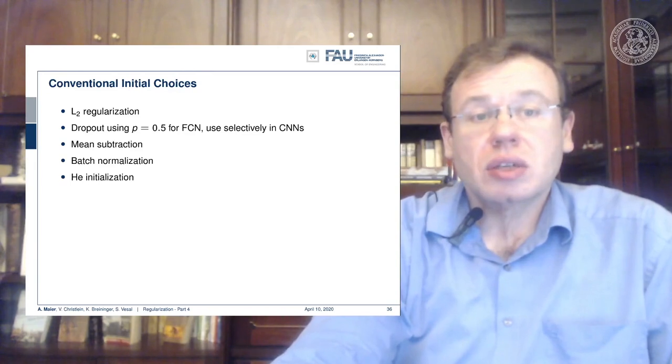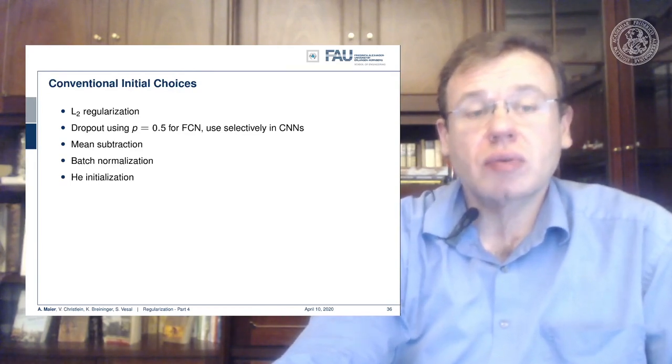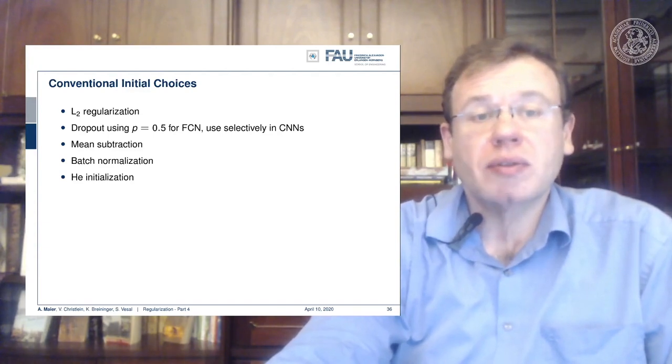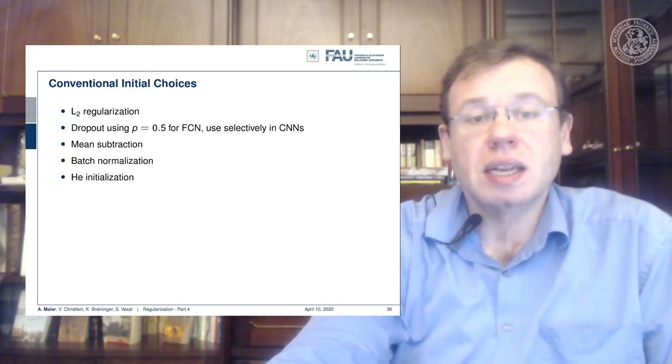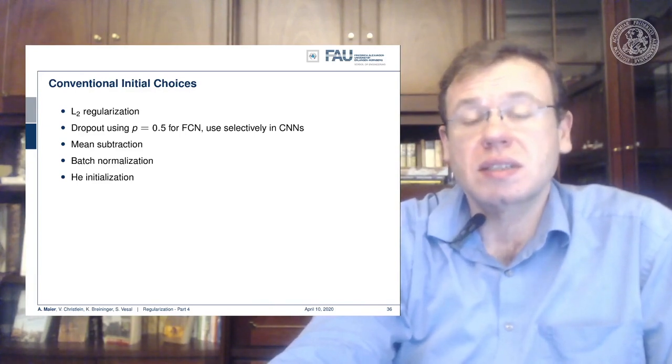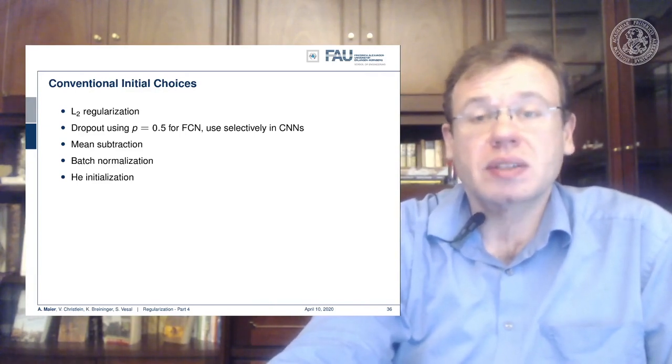Then other conventional initial choices: you do L2 regularization, you use dropout with a probability of 0.5 for fully connected layers, and you use them selectively in convolutional neural networks. You do mean subtraction, batch normalization, and He initialization. So this is the very typical setup.